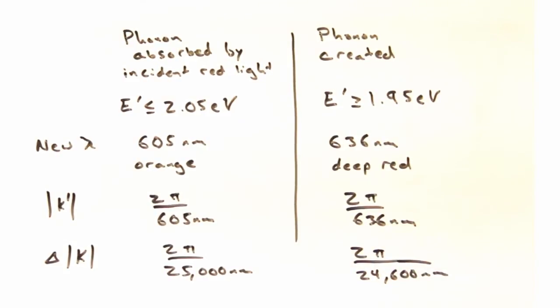where the change in the magnitude of k, from k prime to k, is an incredibly small number, particularly compared to the size of the reciprocal lattice.